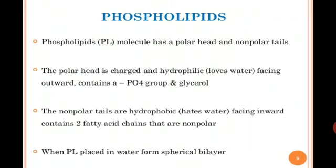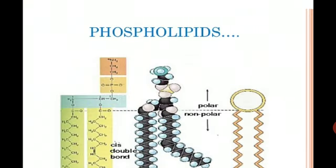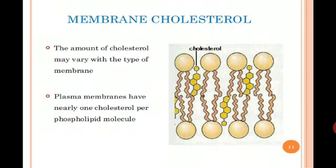According to the rule that like dissolves like, the polar head is hydrophilic because it is water-loving, and the nonpolar tail is hydrophobic. Water is polar, so the polar head faces the water while the nonpolar tail does not. Phospholipids placed in water form a spherical bilayer. The head is represented by the glycerol and phosphate group, while the nonpolar tail is represented by the two fatty acid chains. These many phospholipid molecules together make the boundary of the cell membrane.